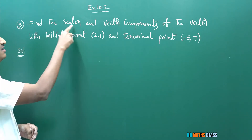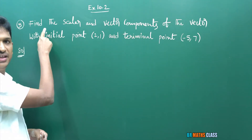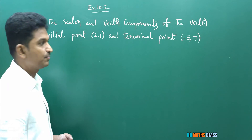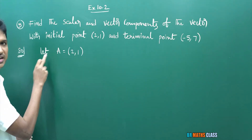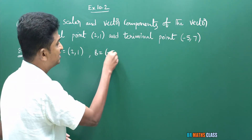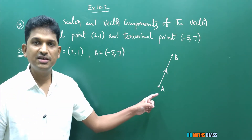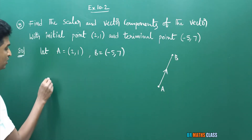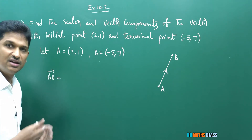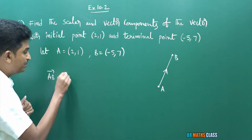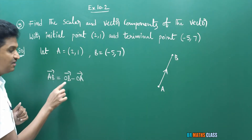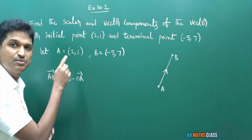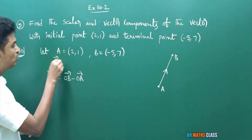Question 5: find the scalar and vector components of the vector with initial point (2, 1) and terminal point (−5, 7). Let A = (2, 1) and B = (−5, 7). I will calculate the vector AB bar using the formula AB bar = OB bar − OA bar. The position vector OA bar = 2i cap + j cap, and OB bar = −5i cap + 7j cap.